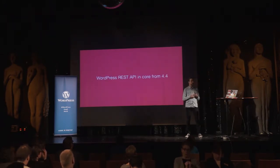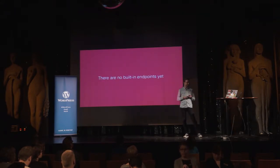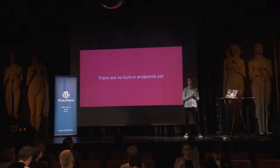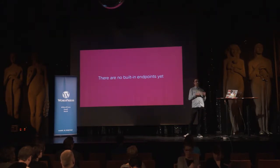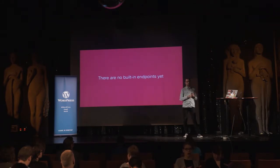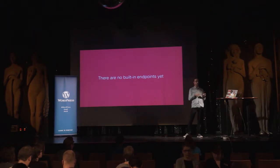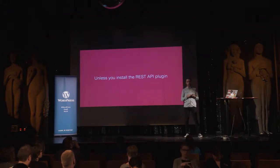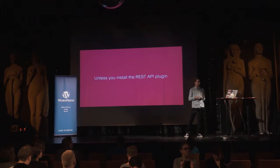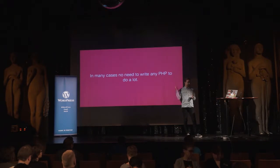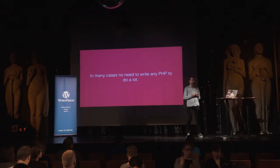In version 4.4 of WordPress, which came out last December, we now have the REST API — kind of. I say 'kind of' because there are no built-in endpoints yet, just the infrastructure part, which means the outer layers of that API are still missing. You can't really work with the native data types yet, except if you install the full REST API plugin, but that's still under development and the API is not fully frozen yet, so you need to track those changes and modify your code accordingly. The freeze is coming, though.